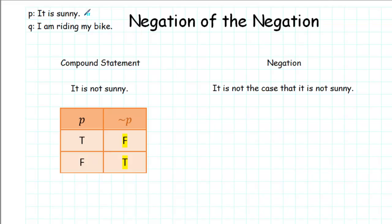Let's say we have a simple statement: it is sunny. Then the negation is, it is not sunny.